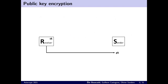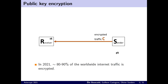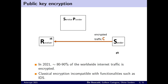In classical public key encryption, the receiver generates a pair of keys that allow others to send him private messages. Today, most internet traffic is encrypted to ensure the privacy of users. But this encryption is incompatible with functionalities like intrusion detection systems, where a service provider searches the traffic for patterns that indicate malicious activity.